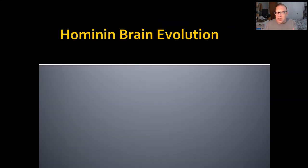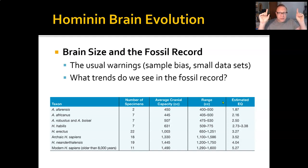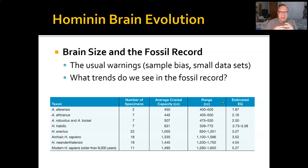So what does this mean in terms of brain evolution? If we use the fossils we have as a proxy for brain size — and there's a big asterisk there, because the fossils are not a complete record of the past — they do give us some idea and might show us general trends.